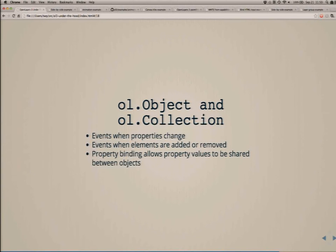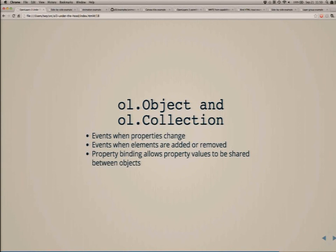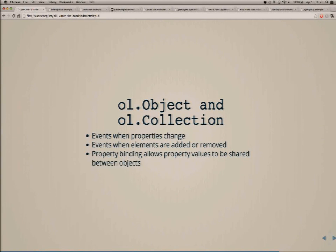OL.Object and OL.Collection — this is a sort of active object type implementation, very heavily inspired by MVCObject in Google Maps. This makes many tricky things very easy to implement. They provide a consistent interface for events — you will know when a property changes. Collections support events when things are added or removed. And what's particularly interesting is property binding, which allows two different objects to share the same value.